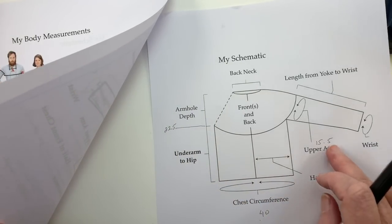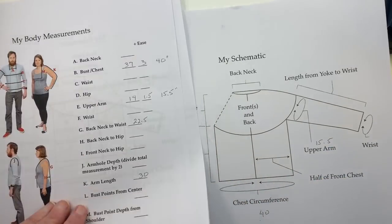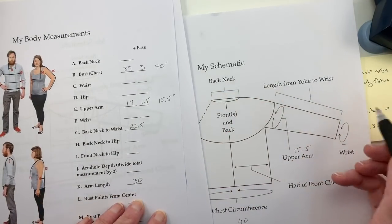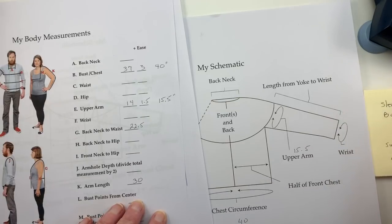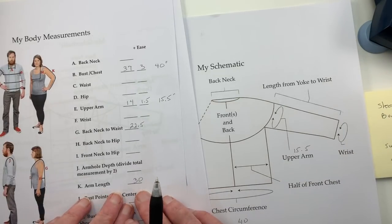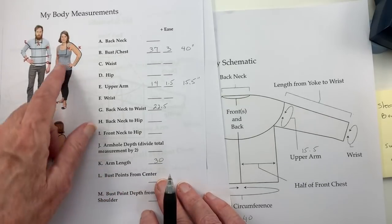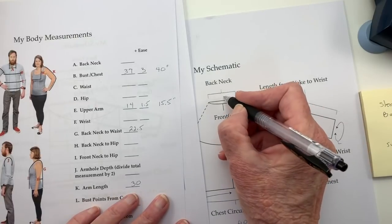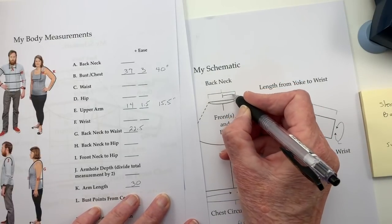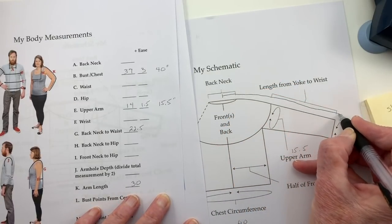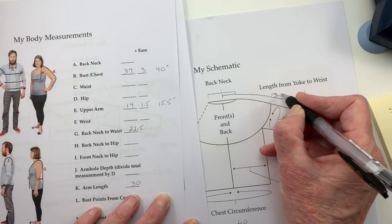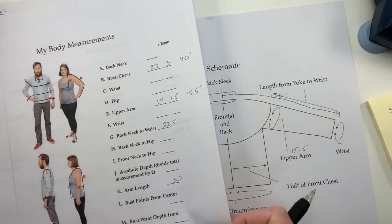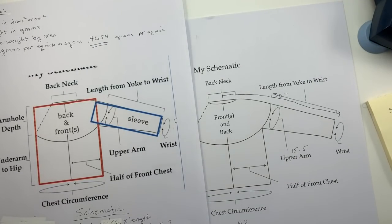One, two, three. One more. We need to know the length from the back neck to the cuff, right? So that's my arm length, that's K on this diagram, and that is 30 inches. So from here, all the way to here, is 30 inches. I need that number. Okay, so now we're done with this. And we're going to move on to this page.